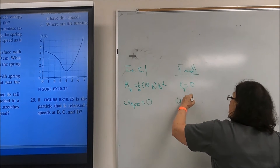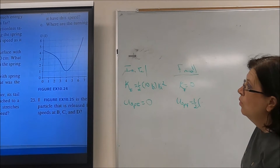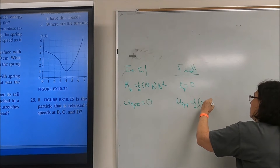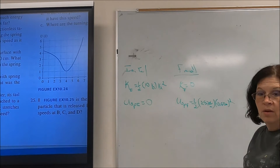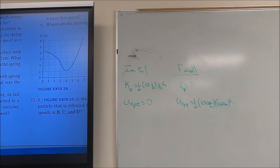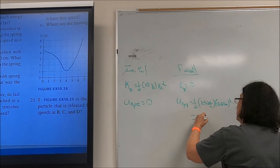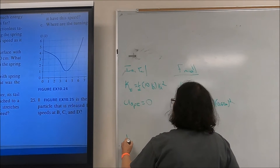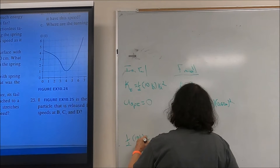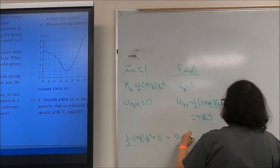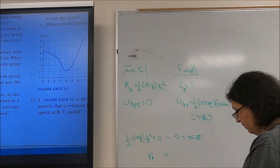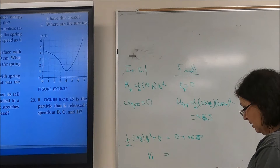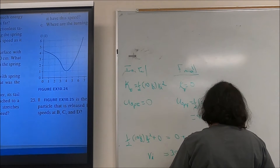The final spring potential energy is ½ × 250 × (0.60)². Calculating: 250 × 0.6² ÷ 2 = 45 joules. So ½ × 10 × v_initial² + 0 = 0 + 45 joules. Solving: 45 ÷ 10 × 2, then take the square root — v_initial equals 3 meters per second.